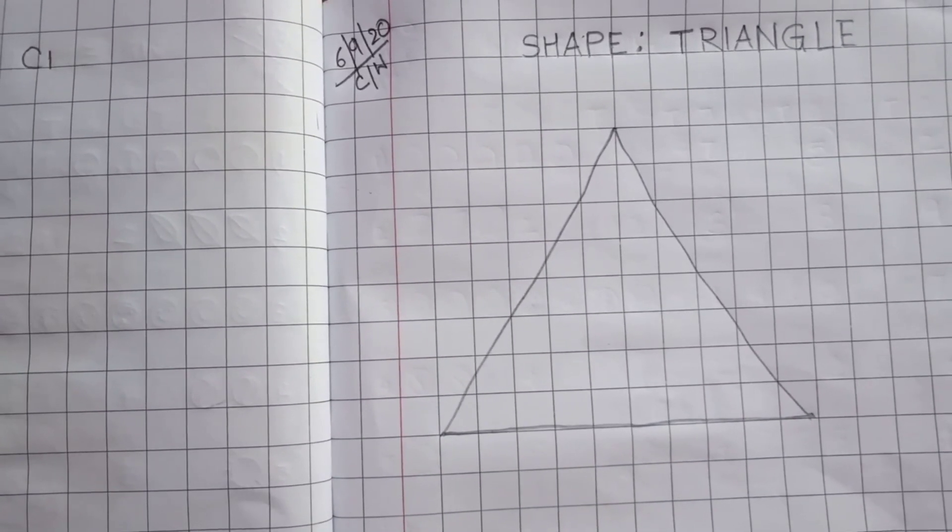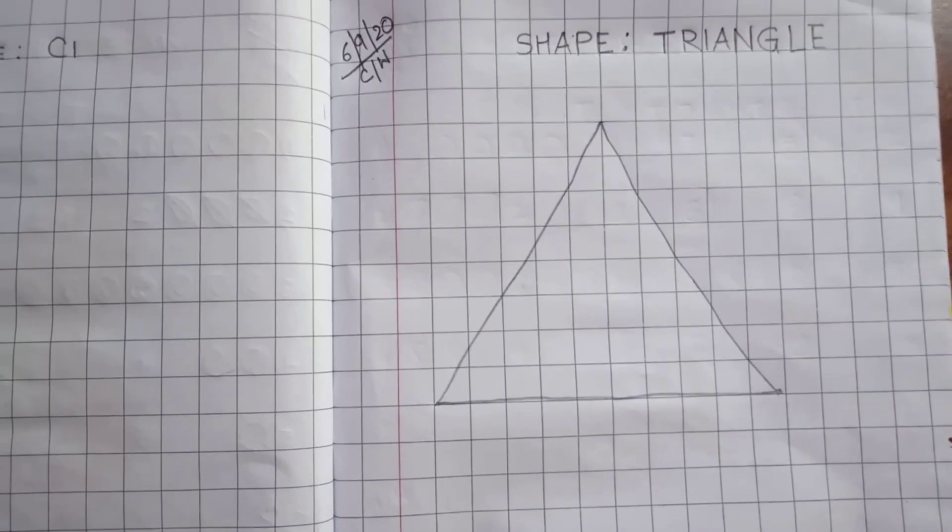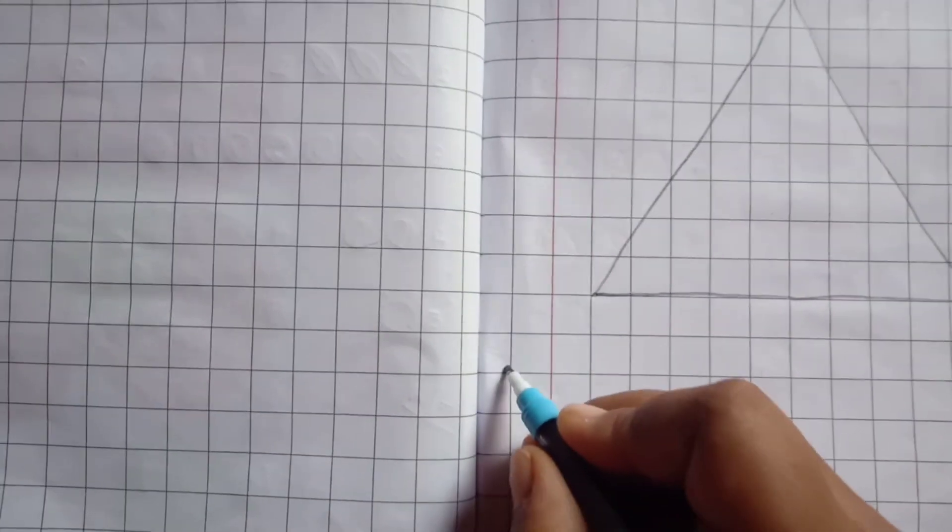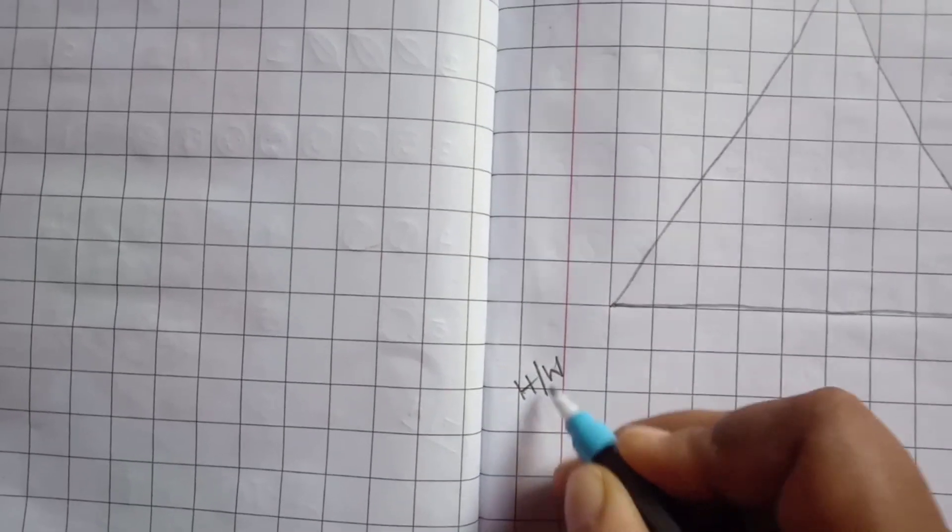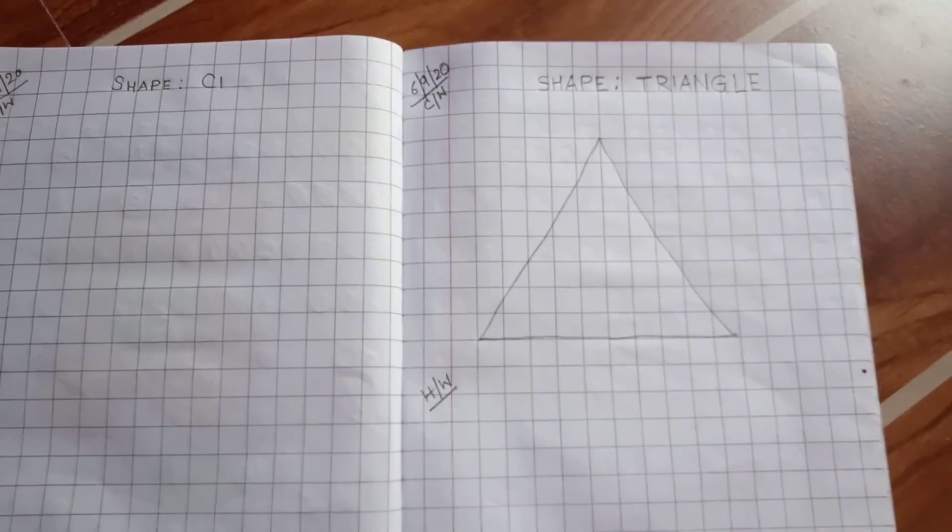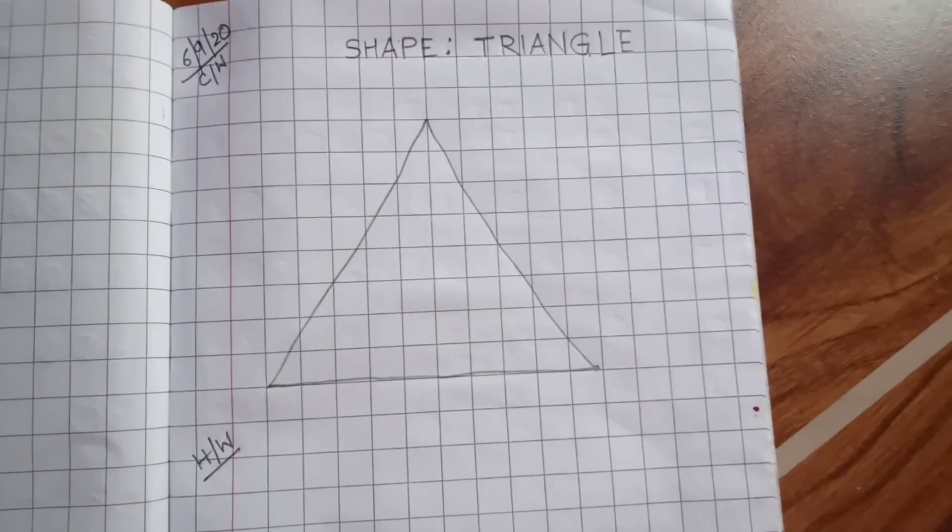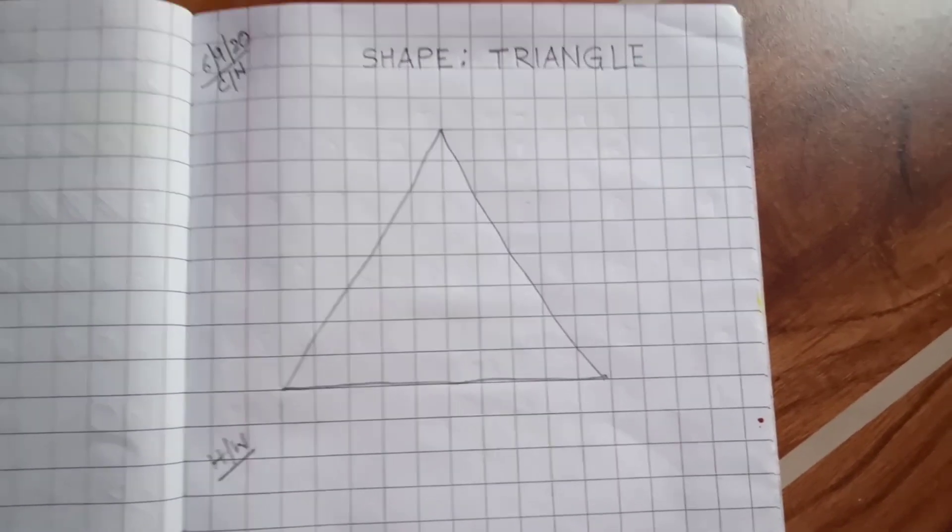So a triangle has three corners and three sides. Here we will write HW which means homework. You have to draw another triangle like this.